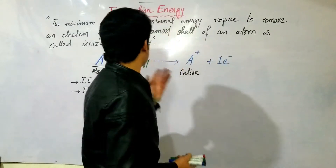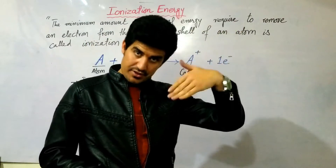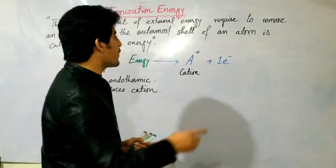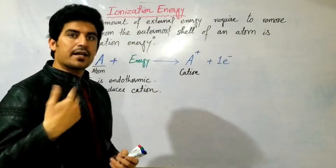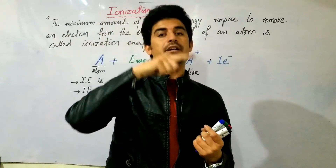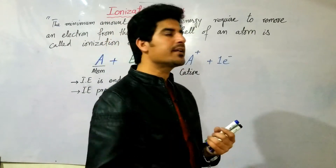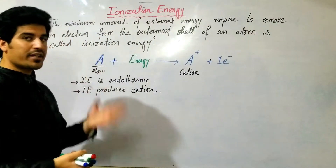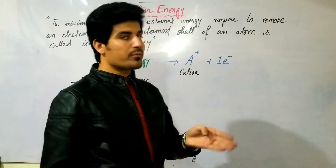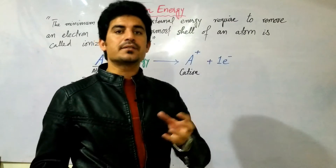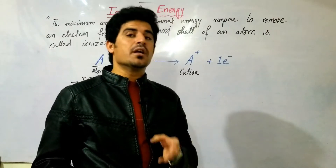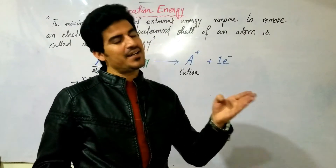Ionization energy is defined as the minimum amount of external energy required to remove an electron from the outermost shell of an isolated atom. The minimum amount of energy required to remove an electron from the outermost shell of an isolated atom is called ionization energy.